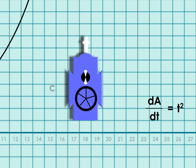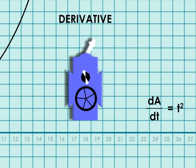As delta t shrinks to zero, x squared becomes t squared. In other words, the derivative of the area function is t squared.